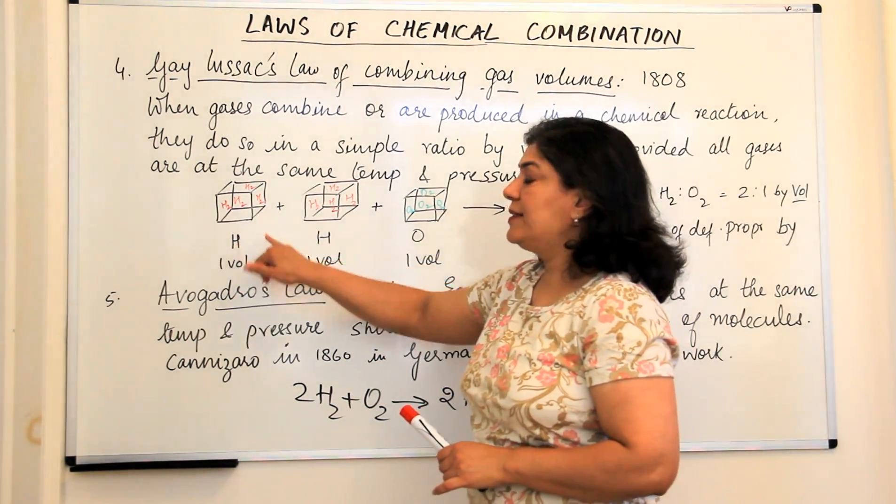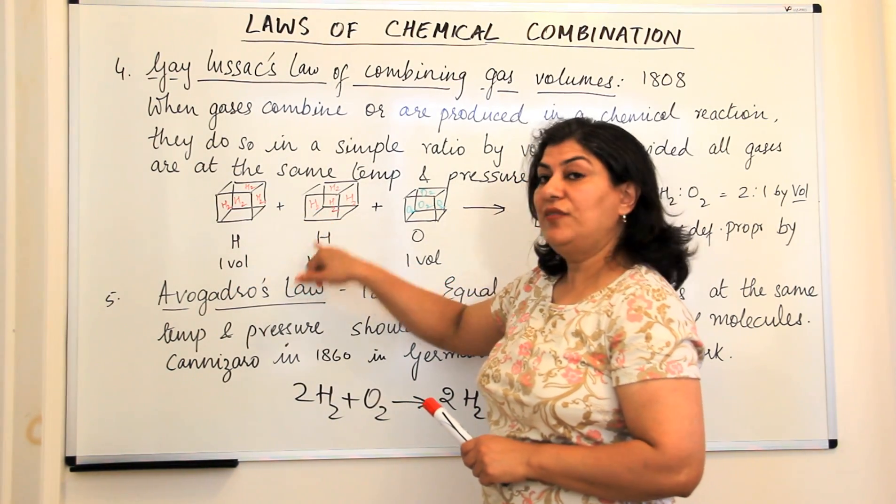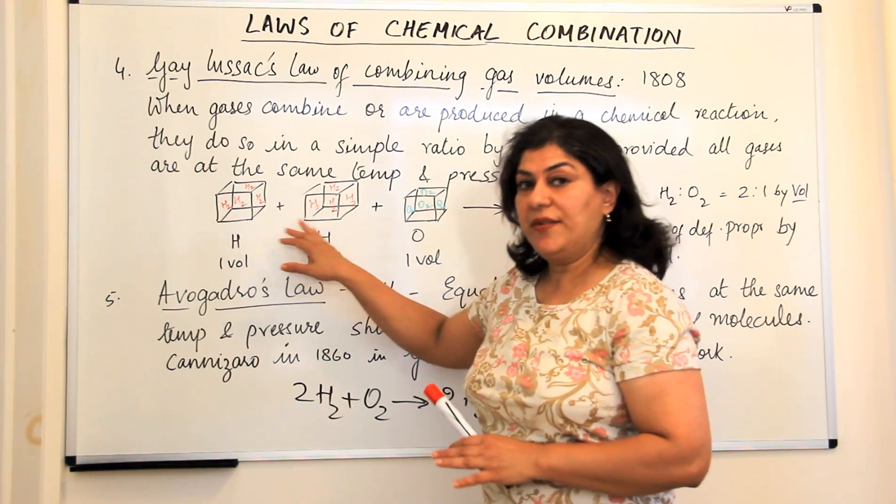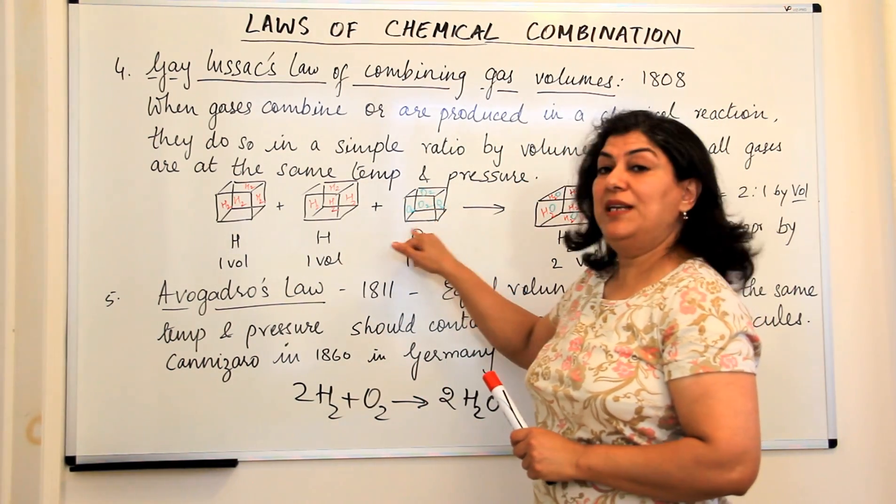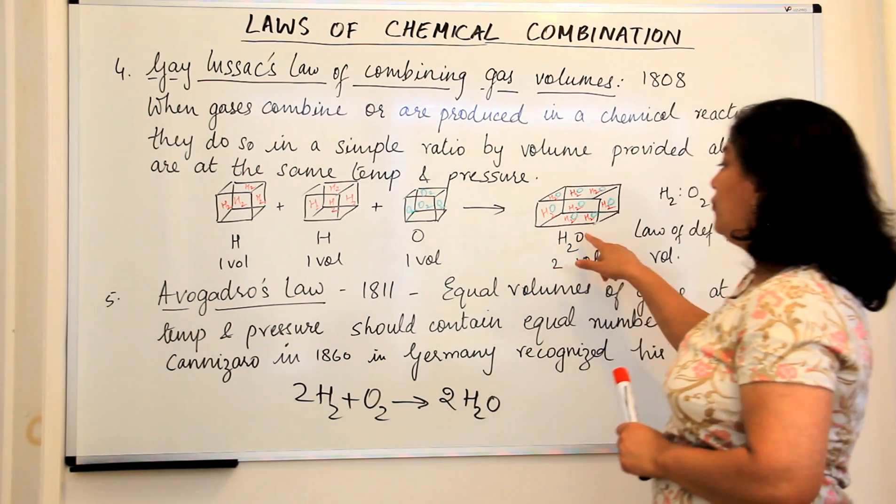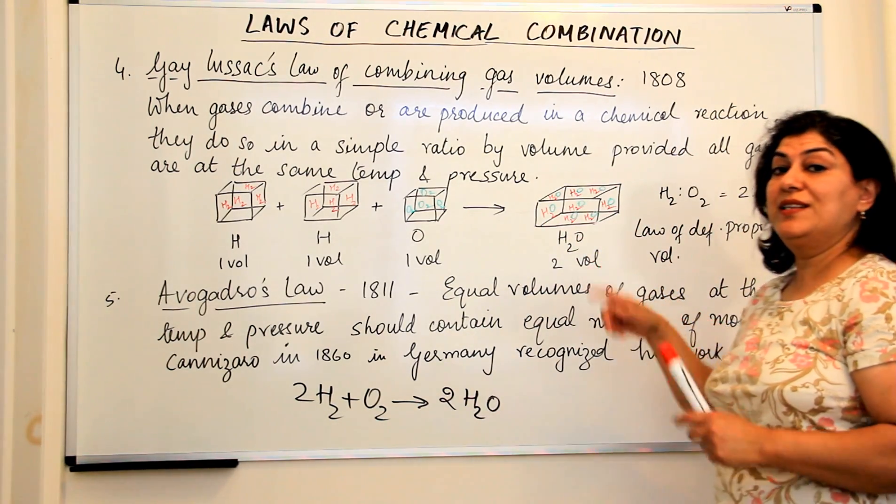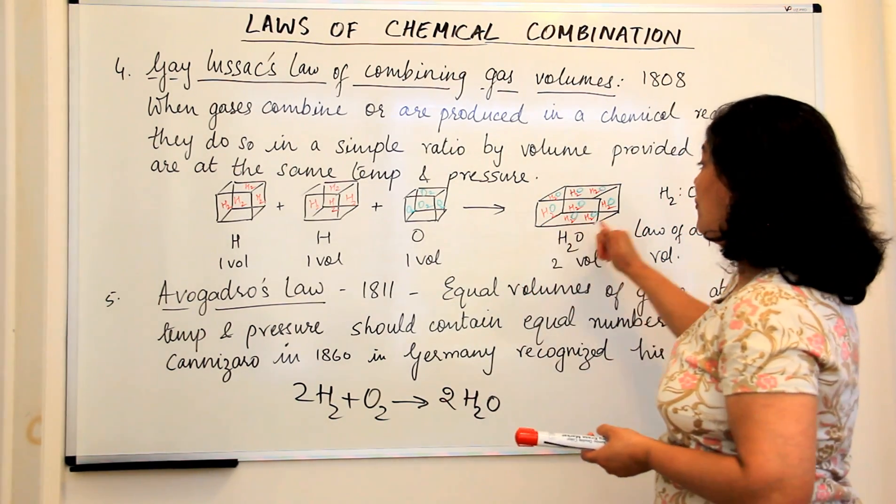So hydrogen, let us say, is 50 milliliters and another 50 milliliters of hydrogen, which means 100 milliliters of hydrogen would combine with 50 milliliters of oxygen to form two volumes, which means 100 milliliters of water.